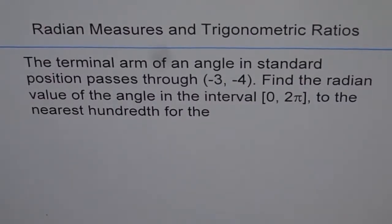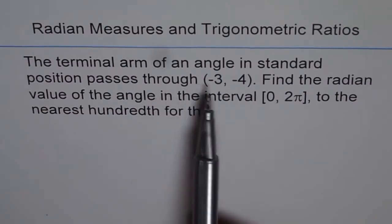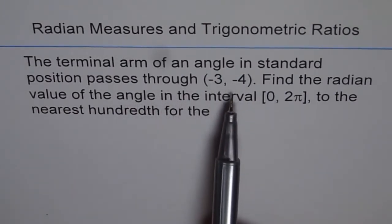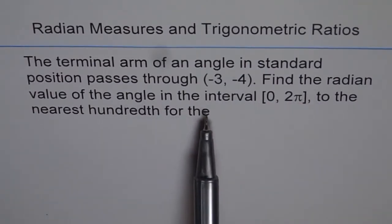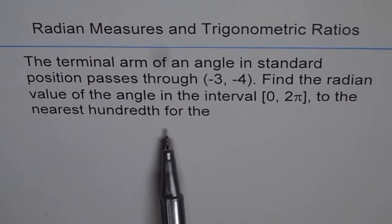Radian measures and trigonometric ratios. The terminal arm of an angle in standard position passes through (-3, -4). Find the radian value of the angle in the interval [0, 2π] to the nearest hundredth.